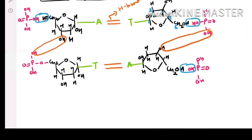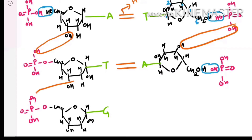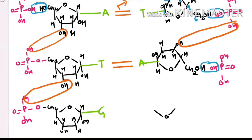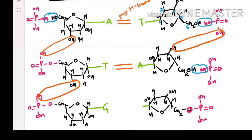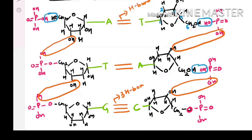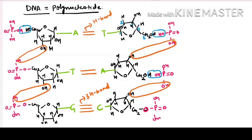Let us make the third nucleotide pair — again the phosphodiester bond. For the complementary base pairing on this side, in front of G, C will come. The diester bond formation is done, and three hydrogen bonds are made between the G-C base pair. So from this diagram it is clear: A pairs with T with two hydrogen bonds, and G pairs with C with three hydrogen bonds.